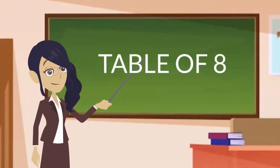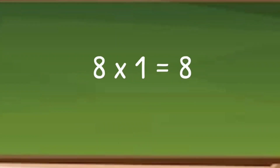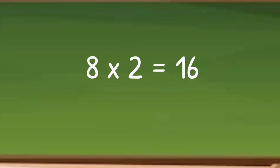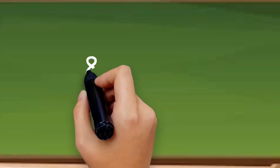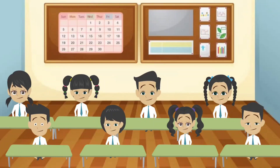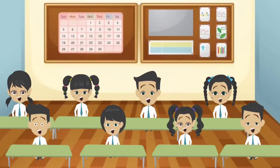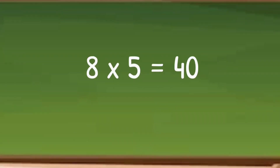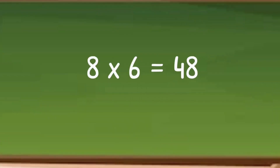Let's learn the table of 8. 8 1s are 8. 8 2s are 16. 8 3s are 24. 8 4s are 32. 8 5s are 40. 8 6s are 48.